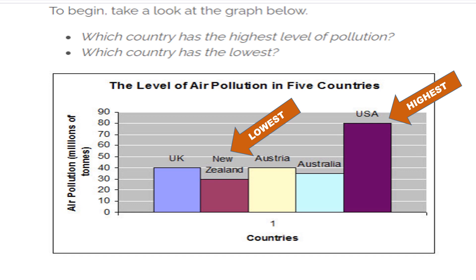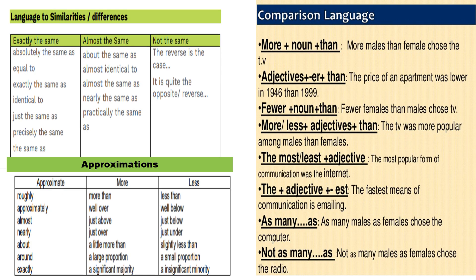Now let's look at the vocabulary you can use to describe a static chart. If you see the numbers are the same, you will use words like exactly the same, almost the same, absolutely the same, equal to, identical to, the same as. If the amount is not clear — say you're not sure if it's 30, 35, or 36 — you use the words approximately, roughly, almost, about, nearly, or around. And if it is exactly something, you will say exactly.